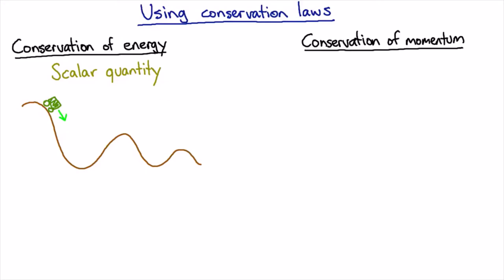Now conservation of momentum would be a terrible thing to try and use for that problem because momentum is a vector quantity. And in this problem, the force of gravity and the force of the roller coaster pushing on it, the normal force, will be changing the momentum of this trolley all the time, and indeed it'll be changing in different directions.